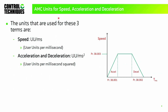The units for menu 38: speed is in user units per millisecond, shown on the Y-axis. Accel and decel are in user units per millisecond squared. While these are unusual terms, they're engineering units, so I don't have to convert from degrees per minute or RPM and time — they're already in engineering terms, which makes calculating them easier.